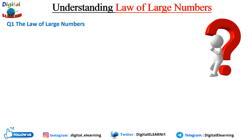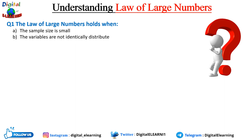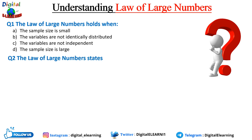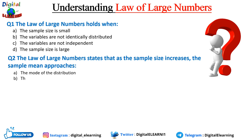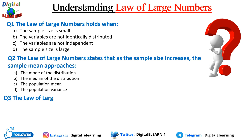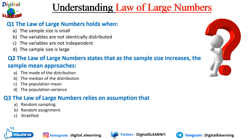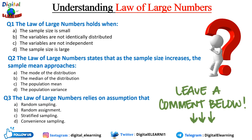Now it's quiz time. Question 1: The Law of Large Numbers holds when — (a) the sample size is small, (b) the variables are not identically distributed, (c) the variables are not independent, or (d) the sample size is large? Question 2: The Law of Large Numbers states that as the sample size increases, the sample mean approaches — the mode, the median, the population mean, or the population variance? Question 3: The Law of Large Numbers relies on the assumption of — random sampling, random assignment, stratified sampling, or convenience sampling? Leave your answers in the comments below.